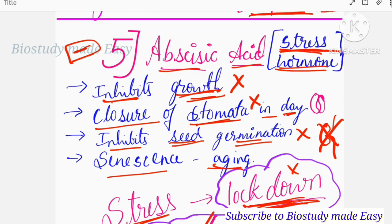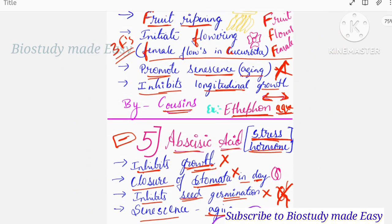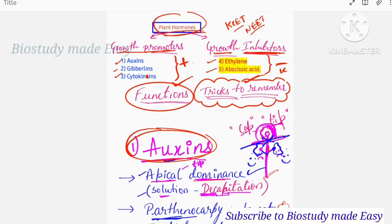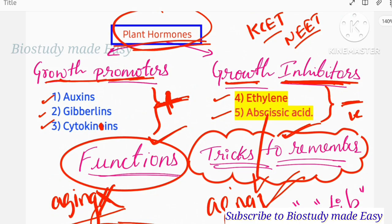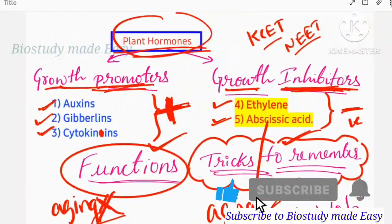So to summarize: growth promoters are auxins, gibberellins, and cytokinin; growth inhibitors are ethylene and abscisic acid — though ethylene also promotes fruit ripening and flowering. Growth inhibitors promote aging. I hope you are clear about plant hormones and the tricks to remember them. Happy learning, my dear students.